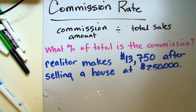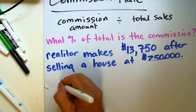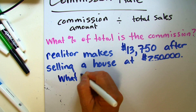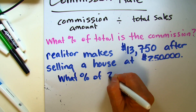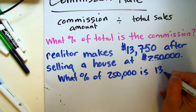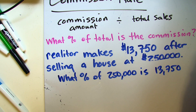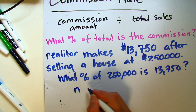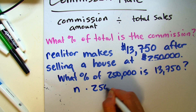Using this example: a realtor makes thirteen thousand seven hundred fifty after selling a home at two hundred fifty thousand, and I want to know what that rate of commission is. I can create a question first: what percent of two hundred fifty thousand is thirteen thousand seven hundred fifty?